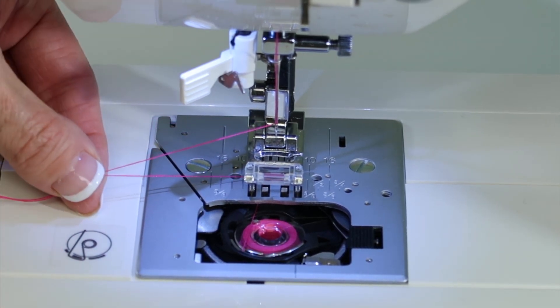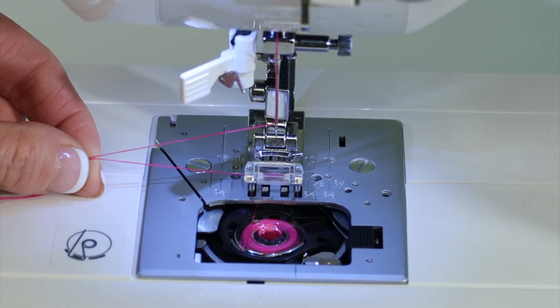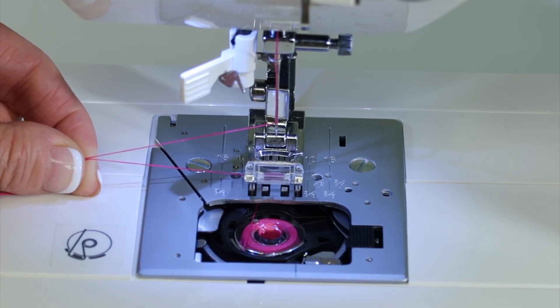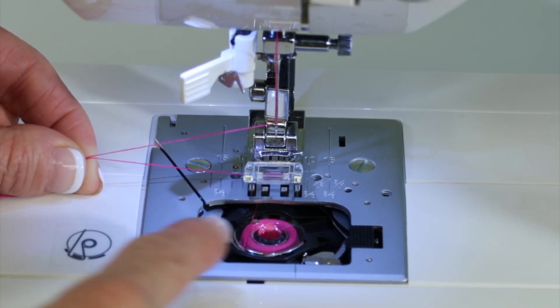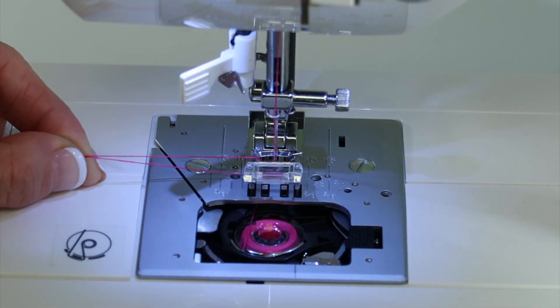With both these threads held, so I can do this without fabric in and underneath the machine, I'm going to turn the hand wheel towards me and start to make a stitch. What I want you to do is watch down in this bobbin area and see what you see as you bring your needle down.